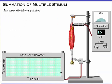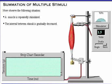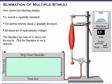Now observe the following situation: a muscle is repeatedly stimulated, the interval between stimuli is gradually decreased, and all stimuli are of equal intensity or voltage. The stimulator has been set to send a series of stimuli to the muscle. Click the stimulator to see how the muscle responds.